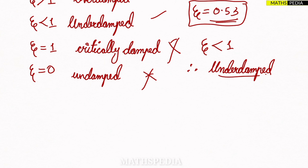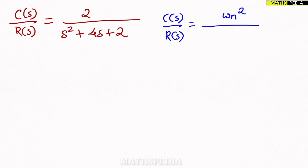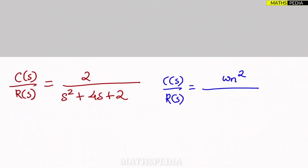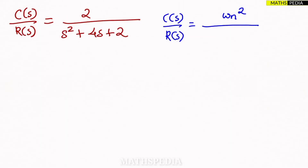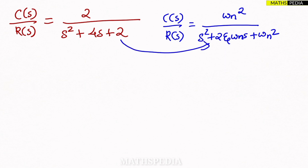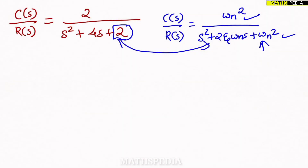Let's go to the next problem. Again, the same approach — compare with the standard second-order closed-loop transfer function: C(s)/R(s) = ω_n² / (s² + 2ζω_n·s + ω_n²). Note: in the previous problem, I should have written omega_n² in the numerator — that correction is noted. First step: identify omega_n from the denominator.